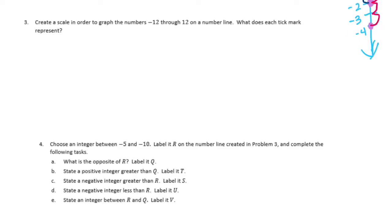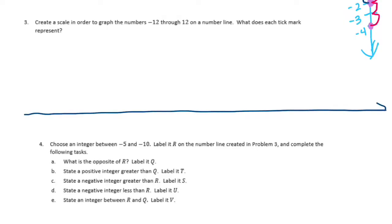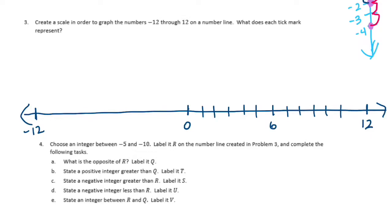Number 3: create a scale in order to graph the numbers negative 12 through 12 on a number line. What does each tick mark represent? Since we're going from negative 12 to 12, I'll put 0 in the middle, this end will be 12, and this end will be negative 12. I just need some tick marks in between, so there's negative 6 in the middle.